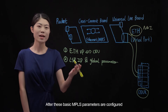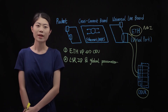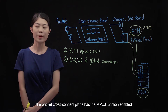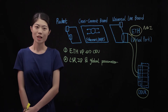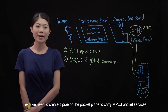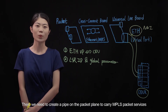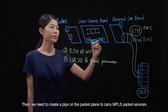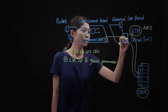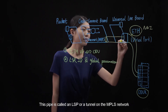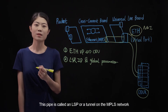The global label is configured to initialize the start label and label space on the MPLS network. After these basic MPLS parameters are configured, the packet cross-connect plane has the MPLS function enabled. Then we need to create a pipe on the packet plane to carry MPLS packet services. This pipe is called an LSP or a tunnel on the MPLS network.